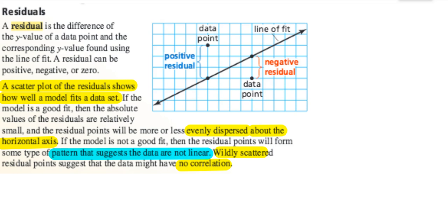If the residuals show some type of pattern, then the data is not linear — there are some non-linear models, but we're working on linear models. And if the residuals are widely scattered, then the corresponding data has no correlation.